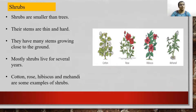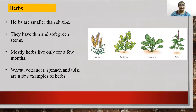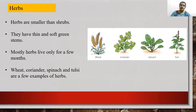Now children, we will move to the third one — herbs. Herbs are smaller than shrubs. They have very thin and soft green stems. Mostly herbs live only for a few months. Examples include wheat, coriander, spinach, and tulsi. After a few months, they are just going to get dried up.